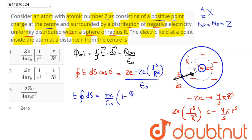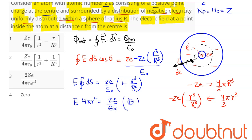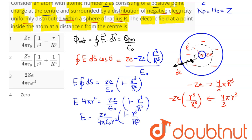Simplifying, we get ZE divided by epsilon naught, multiplied by (1 − r³/R³). So: E·4π·r² = ZE/ε₀ · (1 − r³/R³). Therefore, E equals ZE divided by [4π·ε₀·r²] multiplied by (1 − r³/R³).